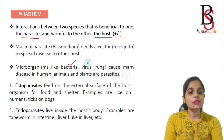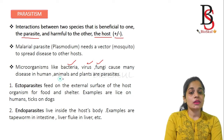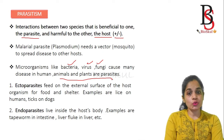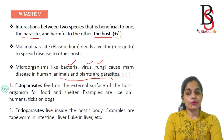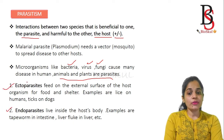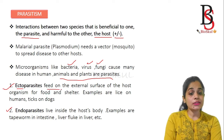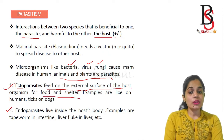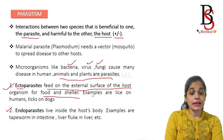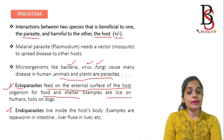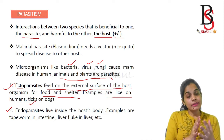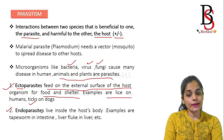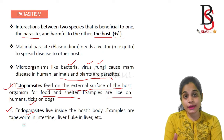Microorganisms like bacteria, viruses, and fungi that cause diseases in humans, animals, and plants are also known as parasites. Parasites are divided into two types: ectoparasites and endoparasites. Ectoparasites ('ecto' means outer) feed on the external surface of the host for food and shelter — examples are lice on humans and ticks on dogs. Endoparasites live inside the host body — an example is the tapeworm in the intestine.